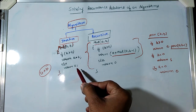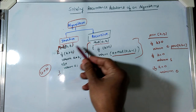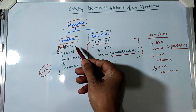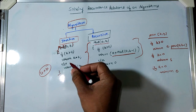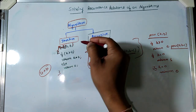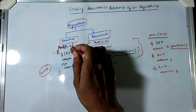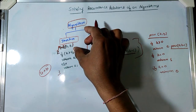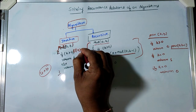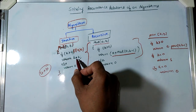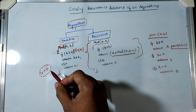Otherwise it will return zero. So if b is less than zero it returns zero. If both a and b are greater than zero then it will return a into b, otherwise it will return zero.